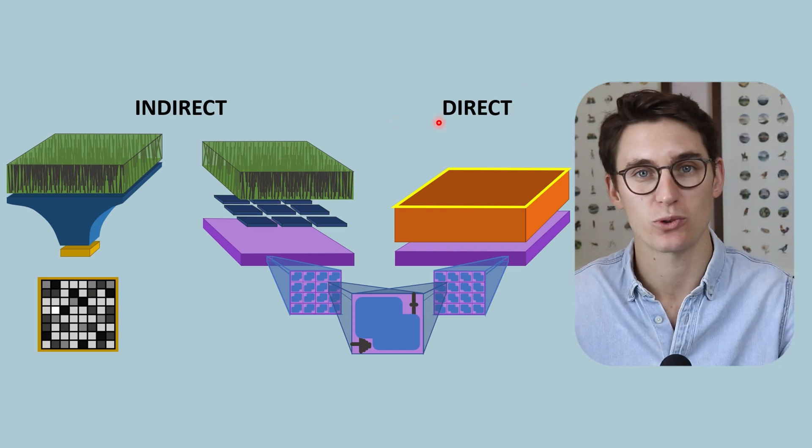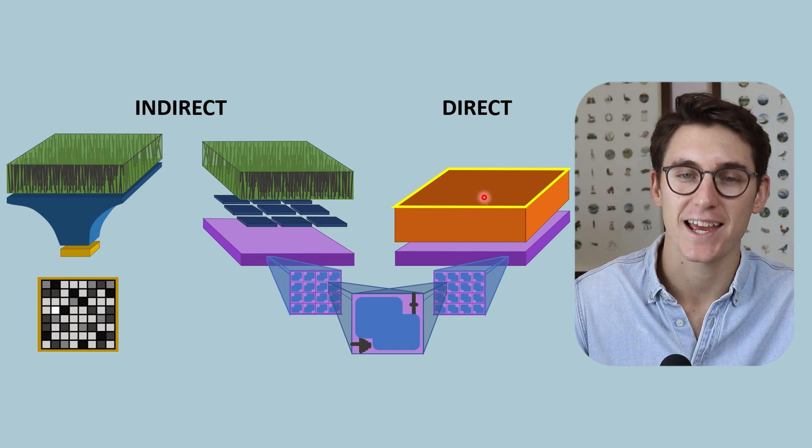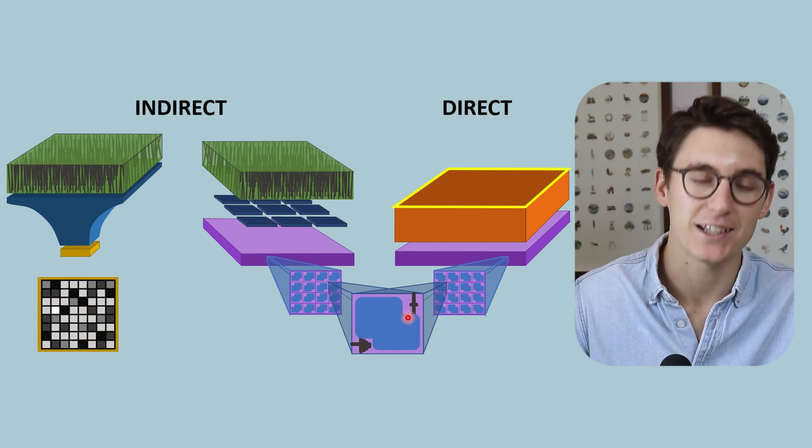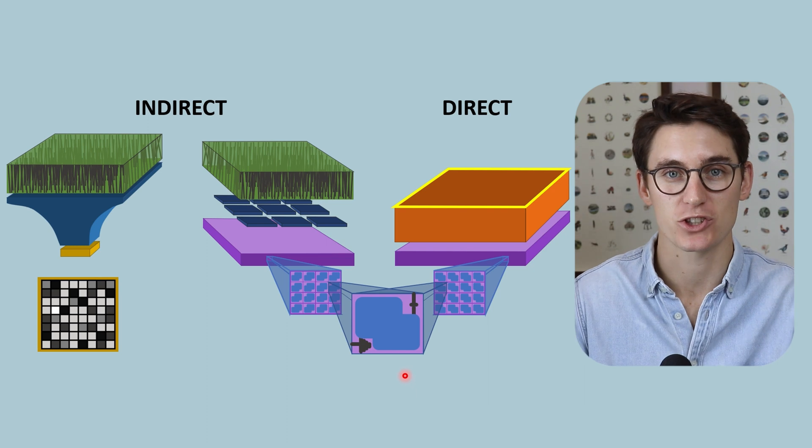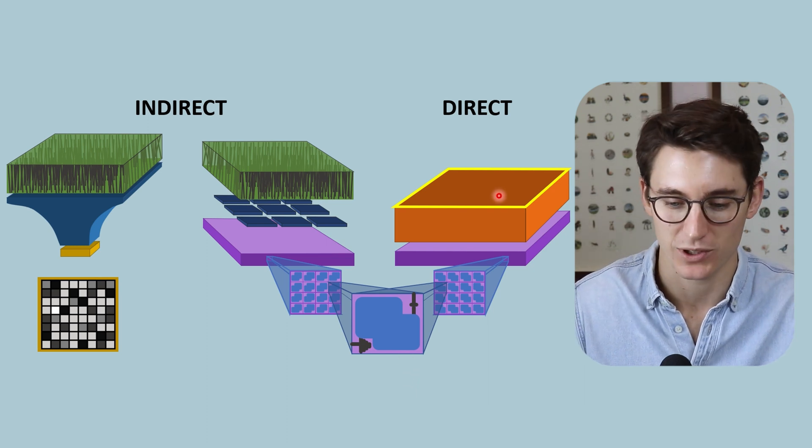Our direct digital radiography systems can take that x-ray energy and directly convert them into an electronic signal that we can store and ultimately process into an image.